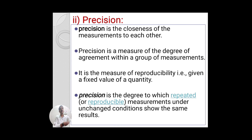Next is precision. Precision is a related term to accuracy, but precision is the closeness of measurements to each other. It measures the degree of agreement within a group of measurements and measures reproducibility for a given fixed value of a quantity. Precision is the degree to which repeated measurements under unchanged conditions give the same result. It gives the number of repeated observations — that is known as the precision or precise value of the sensor or instrument. For example, when a temperature sensor gives a constant observation of 35 degrees Celsius, that is the precise value of the temperature sensor.